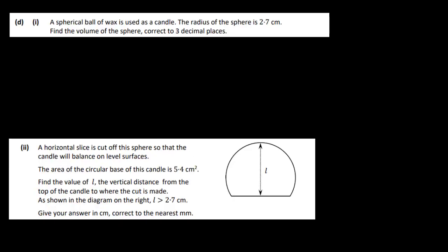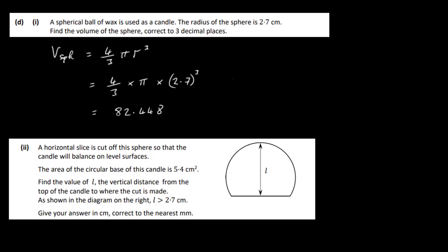A spherical ball of wax is used as a candle with radius 2.7 cm. The volume of a sphere is (4/3)πr³, which is in the maths tables. So the volume = (4/3) × π × 2.7³ = 82.448 cm³ to 3 decimal places.